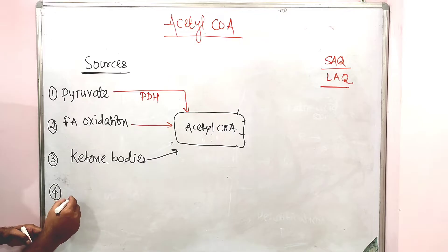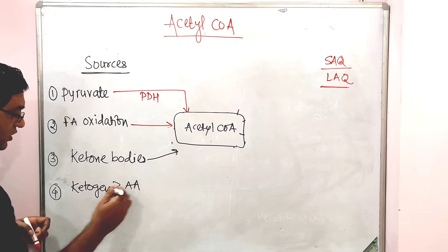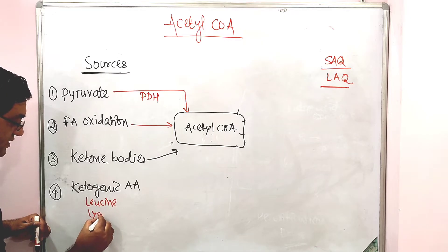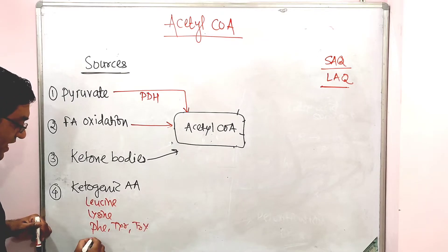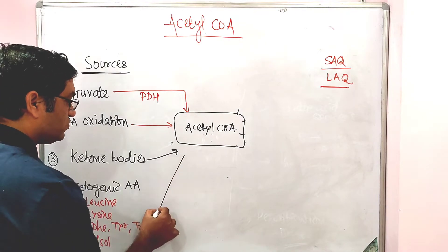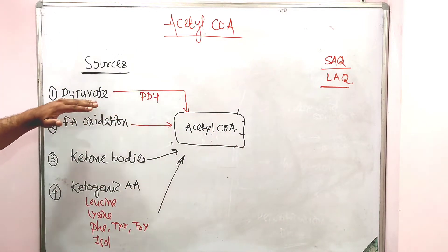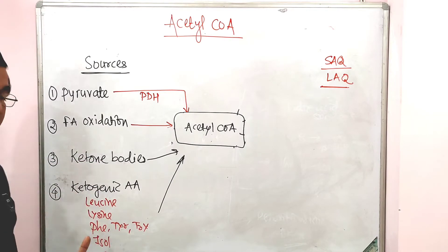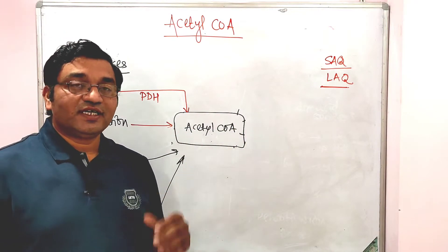The fourth important source of acetyl coenzyme A is via ketogenic amino acids. These include leucine, which is exclusively ketogenic, as well as lysine, phenylalanine, tyrosine, tryptophan, and isoleucine. So the sources of acetyl coenzyme A are: pyruvate, fatty acid oxidation, ketone bodies, and ketogenic amino acids.